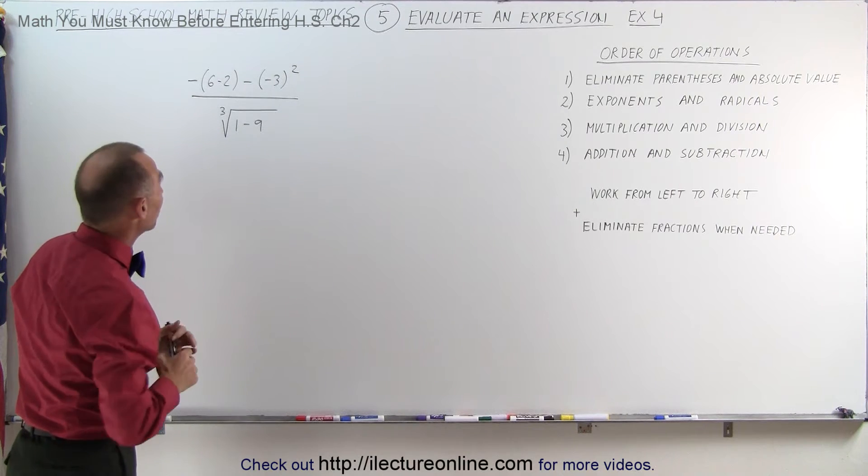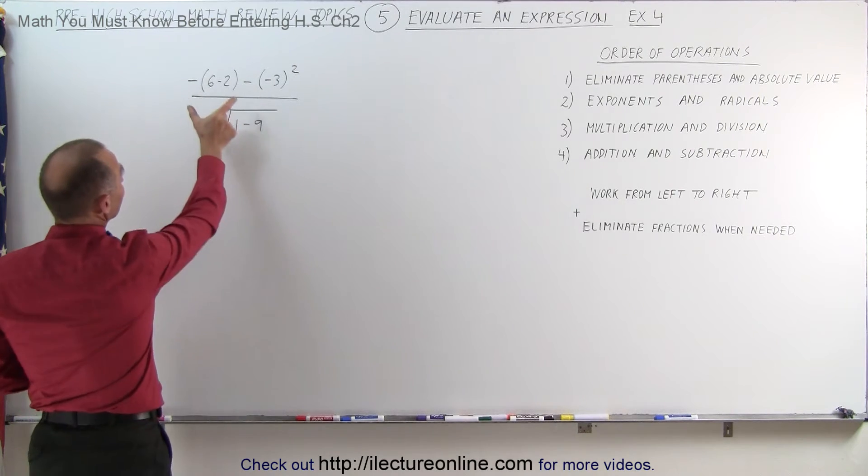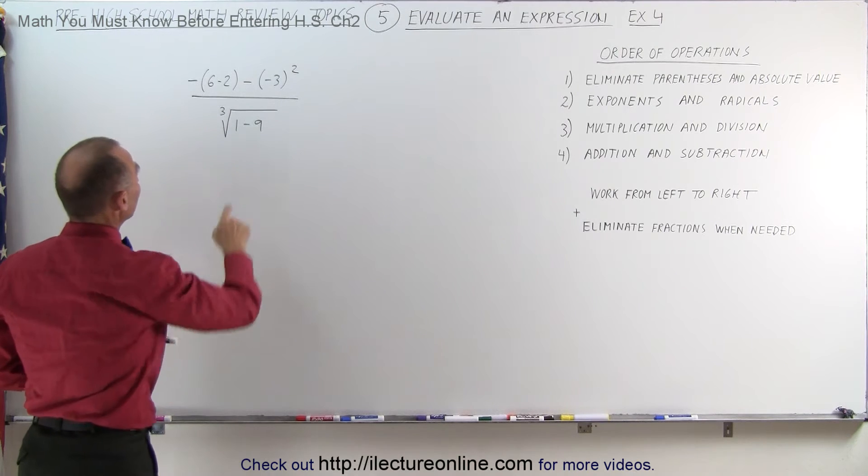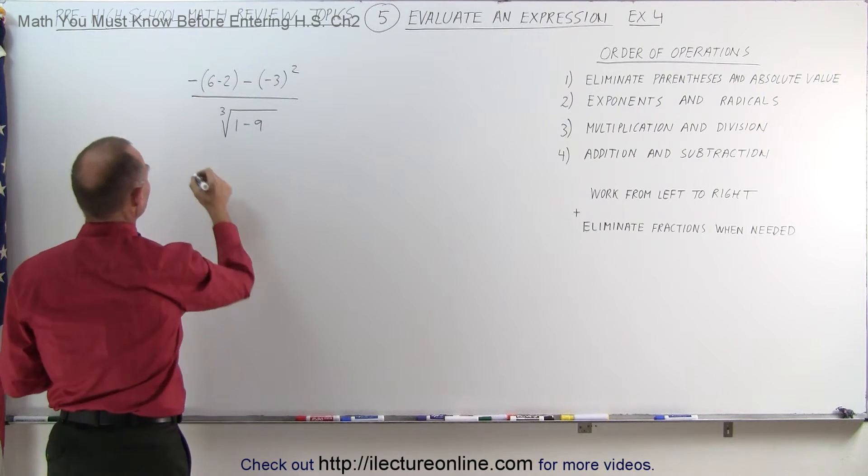So again, we need to follow the order of operations. Let's first eliminate parentheses. In the numerator here, we can have 6 minus 2. We can simplify that.